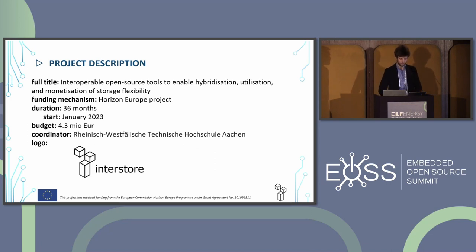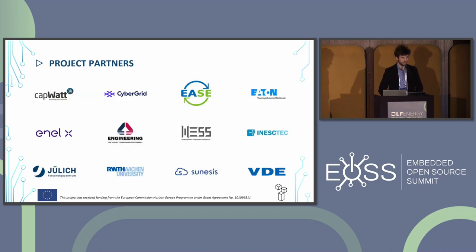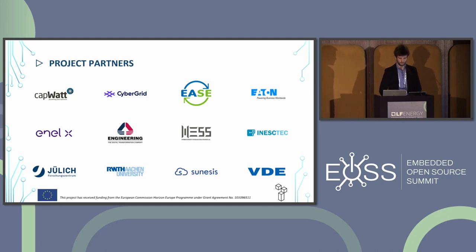The full title of the project is Interoperable Open Source Tools to Enable Hybridization, Utilization, and Monetization of Storage Flexibilities. The funding mechanism is through a Horizon Europe Project. The project started this January and will last for three years, with a total budget of 4.3 million euros. Partners include industry companies like CyberGrid and SMEs, universities like the coordinating Aachen University, and various research and development institutes.